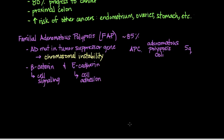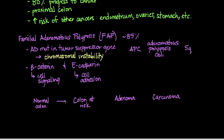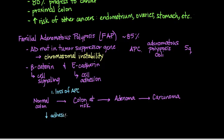The overall sequence of colorectal cancer progression in the FAP pathway goes from normal colon to a colon at risk, then to the formation of an adenoma — which is technically benign but precancerous — and finally to the formation of a carcinoma, which is cancerous. To get from a normal colon to a colon at risk, the first event is loss of APC gene function, which leads to decreased intracellular adhesion and altered cell signaling that causes increased proliferation.